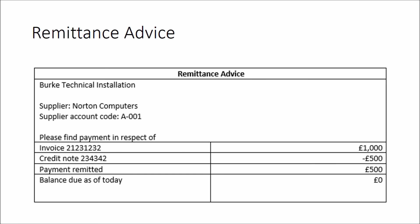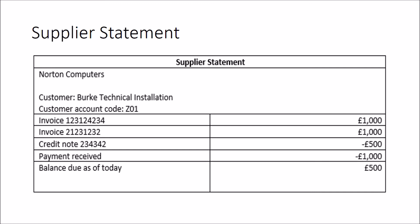A prompt payment discount might be calculated incorrectly. Suppliers might choose to remind customers that they owe money by issuing a supplier statement. You might have a supplier statement from Norton Computers to a customer listing all amounts due, which then needs to be reconciled to that supplier's account in the purchase ledger. There might be a missed prompt payment discount, a missed payment, or a payment recorded in the purchase ledger that the supplier says they haven't yet received.